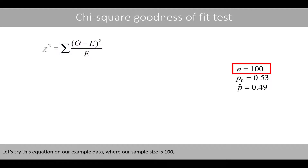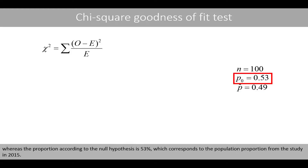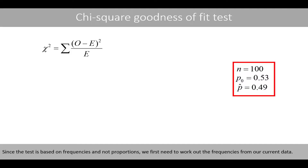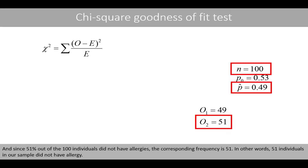Let's try this equation on our example data, where our sample size is 100. The proportion of individuals with allergy in our sample is 49%, whereas the proportion according to the null hypothesis is 53%, which corresponds to the population proportion from the study in 2015. Since the test is based on frequencies and not on proportions, we first need to work out the frequencies from our current data. Since 49% of the 100 individuals had allergies, the corresponding frequency is 49. And since 51% of the 100 individuals did not have allergies, the corresponding frequency is 51 — in other words, 51 individuals in our sample did not have allergy.